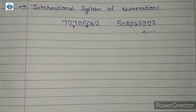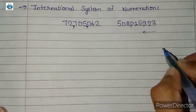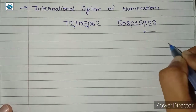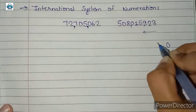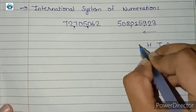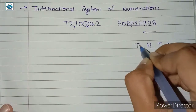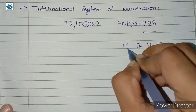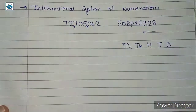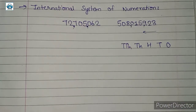So how will we read this number? For that, let us make placement boxes. We have ones, tens, hundreds, thousands, and ten-thousands. These are the same in both the Indian system and the international system of numeration.